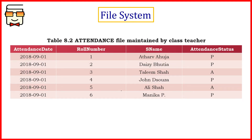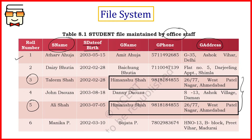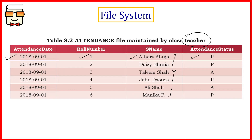Here is another example — the attendance file maintained by the class teacher. This file contains the date, roll number, name of the student, and whether the student was present or absent. Here also the student name is being repeated, and it was also present in the office staff file — this is redundancy and duplication. The class teacher file can simply store roll numbers and corresponding attendance; student names are not required unless the teacher needs to call out names. There should be a mechanism so that information is not repeated, yet all the people who want to use it can do so.